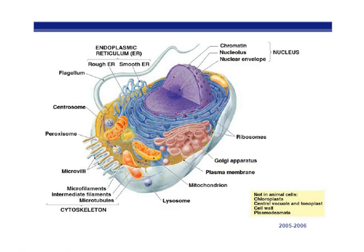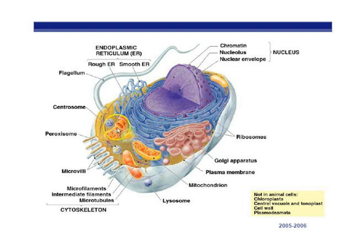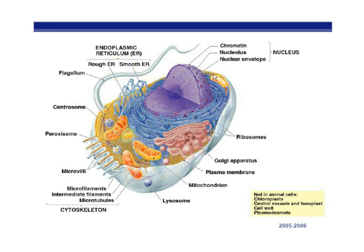Here we have a generic animal cell — this is not what all animal cells look like, just a representation. There are about 100 different types of animal cells in a human body. It does have all the features most cells have: a cell membrane, a nucleus (a membrane-bound storage for our DNA), mitochondria, Golgi apparatus, rough ER dotted with ribosomes, smooth ER, lysosomes, and some cells have a flagella.